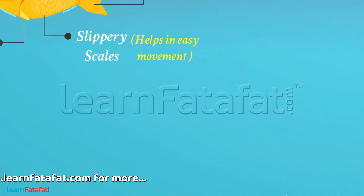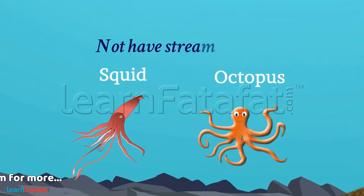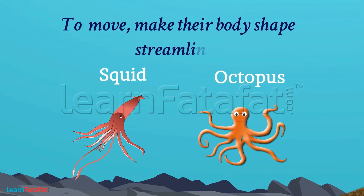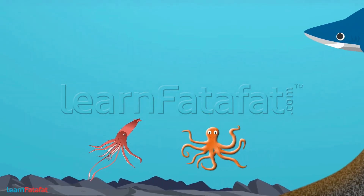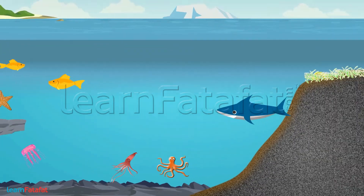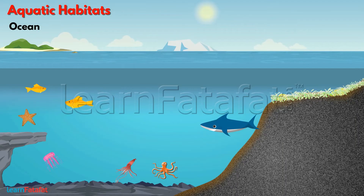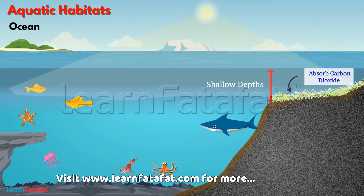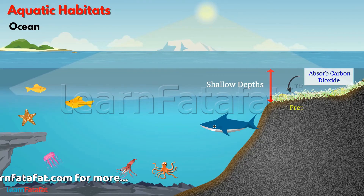Animals like squid and octopus don't have a streamlined body. They live in the deep sea, but when they move, they make their body shape streamlined. Animals feed on plants or smaller animals. Plants are located at shallow depths because sunlight can reach only up to a certain distance below the surface of the ocean. They have the ability to absorb carbon dioxide dissolved in water and prepare their food by the process of photosynthesis.